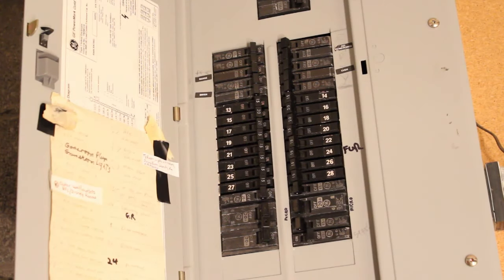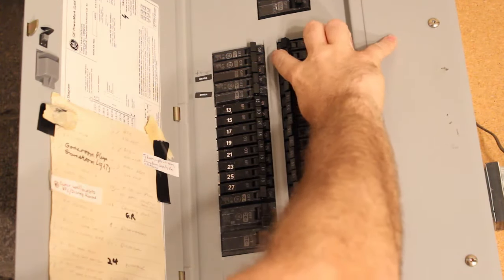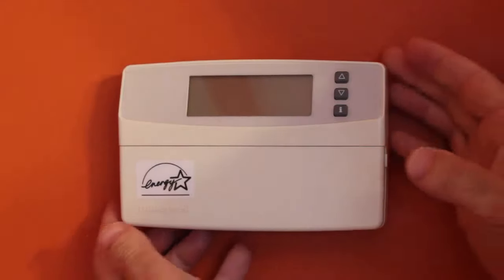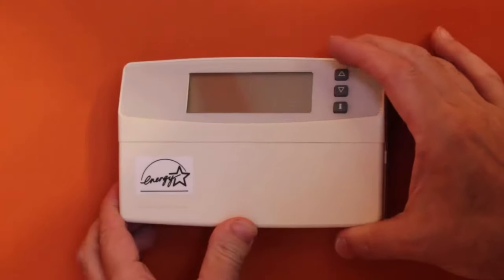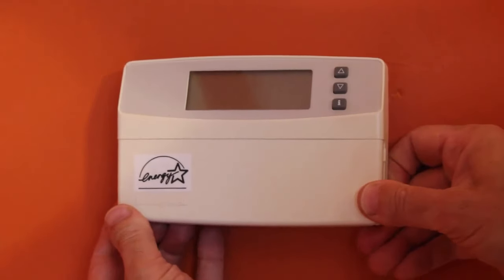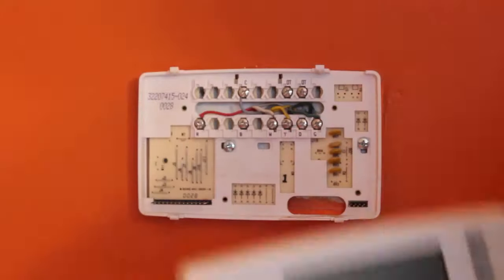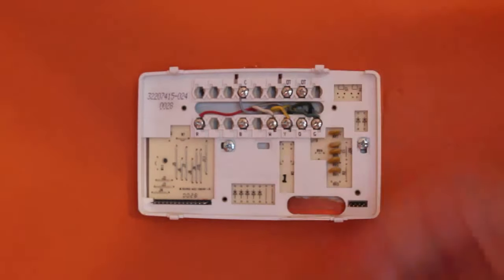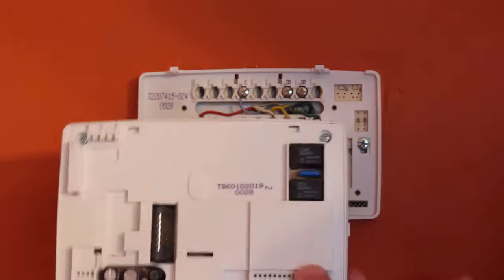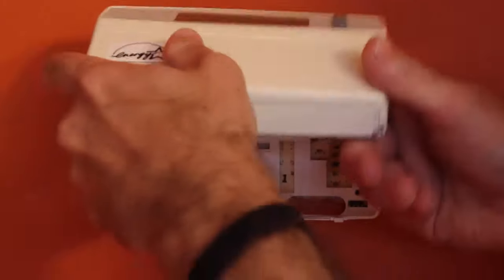Before doing anything with your thermostat, make sure you turn off the electricity to the heating and cooling system at the electric panel or fuse box. Typically on thermostats like this, there are two tabs that are holding it in place. So what you want to do is lift up on it like so and pull out towards you. So it flips up and you pull it out. So the two tabs are here, and then there are pins that go into the back of the thermostat. So that's how you remove it. You pull up and out.